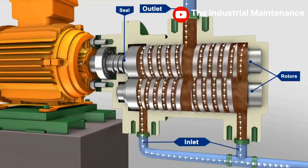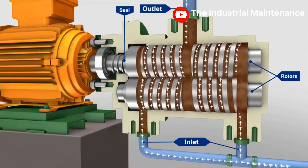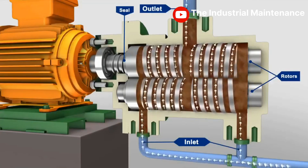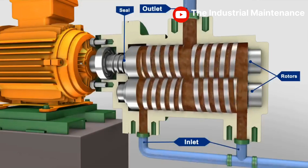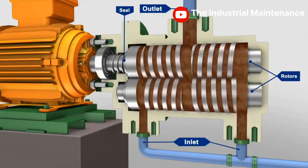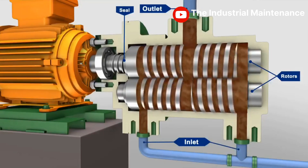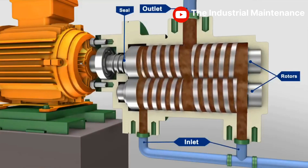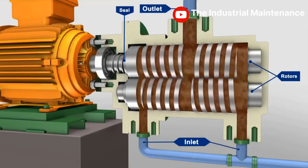The successive sets of seals form fully enclosed cavities that move continuously from inlet to outlet. These cavities trap liquid at the inlet and carry it along to the outlet, providing a smooth flow.